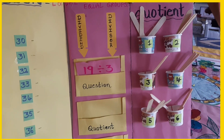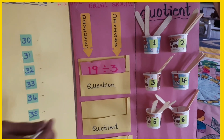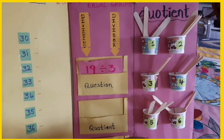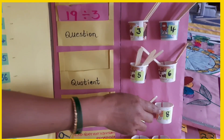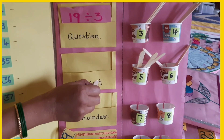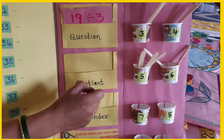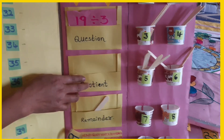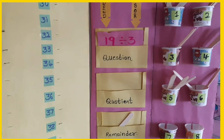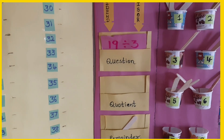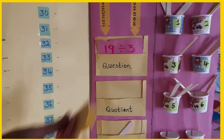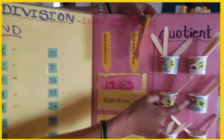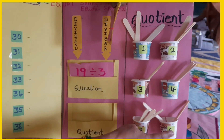What is the remaining? Remaining is 1. Reminder is 1. Quotient is 6 — counting the cups: 1, 2, 3, 4, 5, 6.